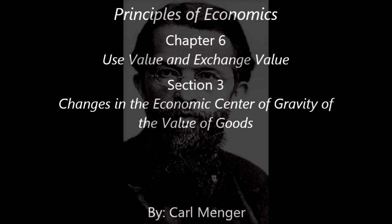Three: we come now to the third and most important cause of changes in the economic center of gravity of the value of goods — I refer to increases in the quantities of goods at the disposal of economizing individuals. An increase in the quantity of a good a person has almost always, other things remaining the same, causes the use value of each unit of the good to diminish and its exchange value to become the more important. After the harvest, the exchange value of grain is almost without exception the economic form of value to farmers, and it remains so until, as a result of successive sales of portions of the grain, its use value again becomes the more important. The grain the farmers still possess in summer generally has a predominating use value to them.